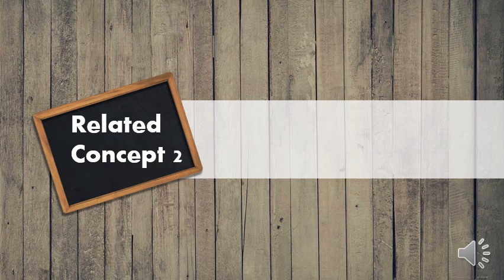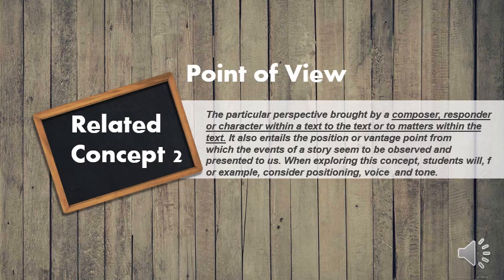This is our second related concept: point of view. It is the particular perspective brought by a composer, responder, or character within a text, to the text or to matters within the text. It also entails the position or vantage point from which the events of a story seem to be observed and presented to us. When exploring this concept, students will consider positioning, voice, and tone. The word vantage point, according to the Cambridge Dictionary, is a place — especially a high place — that provides a good, clear view of an area. Pay attention to this related concept, as it will also be part of the reflection at the end of this unit review.